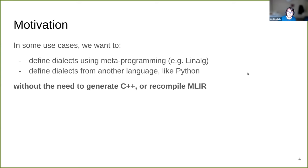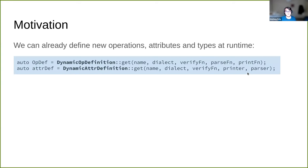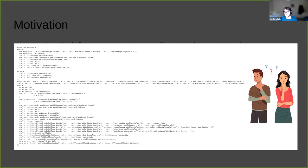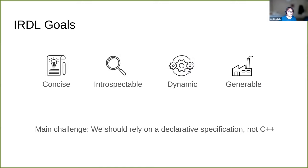Currently in MLIR there are some ways of doing this. There are dynamic dialects or extensible dialects that allow you to define operations, attributes, or types at runtime. The problem is this requires extensive boilerplate code, which is exactly the same code you would have to write if you were writing this in C++ directly without ODS. So the goal of IRDL is to provide an ODS-like way of defining operations, types, attributes, or dialects at runtime.